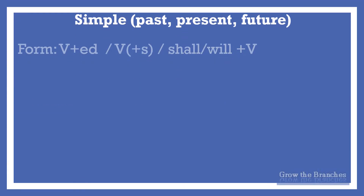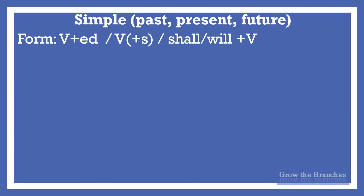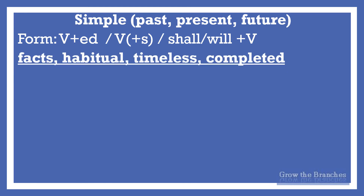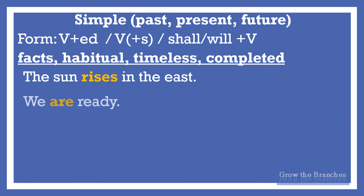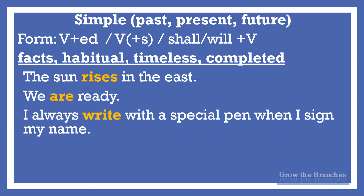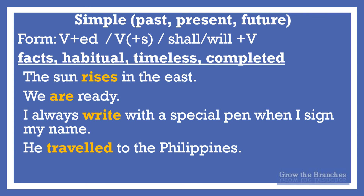Simple tenses can be past simple — form: verb plus 'ed' — present simple — form: verb in infinitive or add 's' for third person singular subjects — or future simple — form: shall/will plus verb in infinitive. Simple tenses have several uses, not limited to indicating specific times. They can express facts, habitual actions, timeless or zero-time actions, and completed actions. For example: 'The sun rises' — present tense used to report a general fact. 'We are ready' — indicates a current state. 'I always write with a special pen when I sign my name' — habitual action. 'He traveled to the Philippines' — completed action. 'I will call you tonight' — promise or prediction.